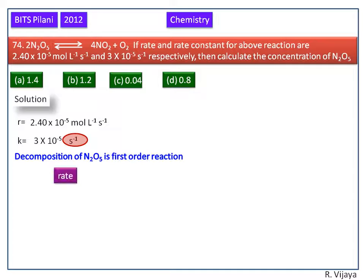Now we see how to write the rate of the reaction for the above reaction. Rate is equal to rate constant into concentration of N2O5 to the power 1. Here 1 indicates the first order reaction.